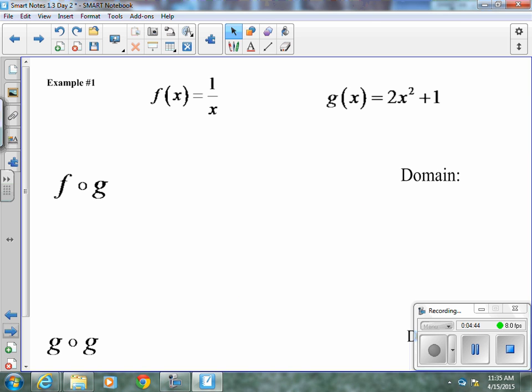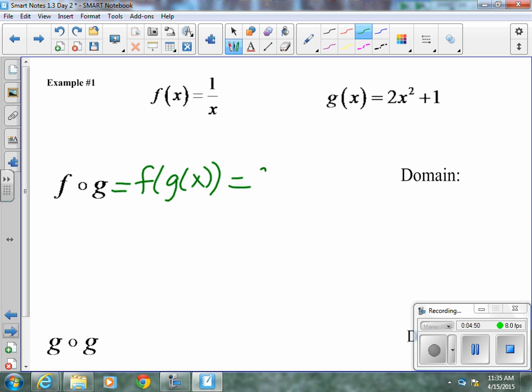Now, f of g of x, this means we need to find f of g of x, or f of 2x squared plus 1, which, if we plug 2x squared plus 1 in for x, we're going to plug it in to get 1 over 2x squared plus 1.